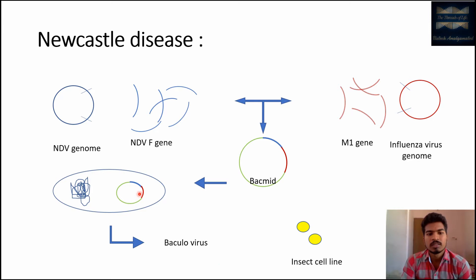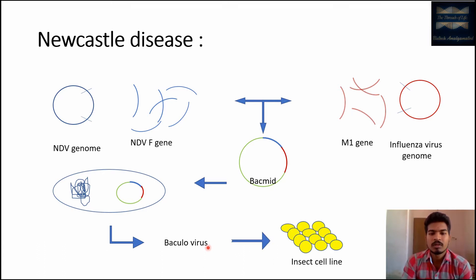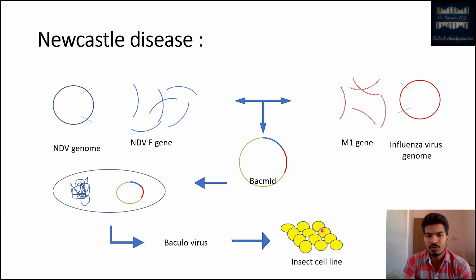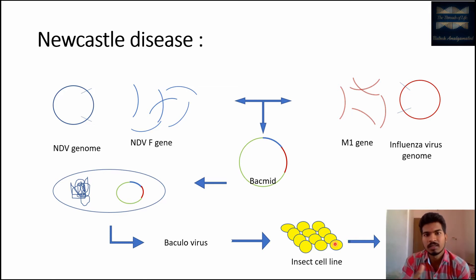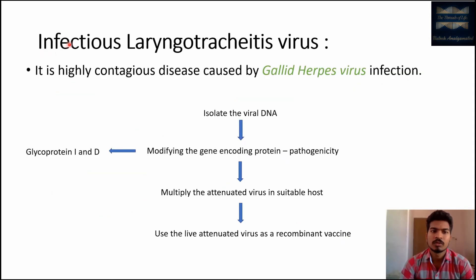Once the bacmid is multiplied in sufficient quantities, it is isolated and inserted into baculovirus. This baculovirus then infects an insect cell line. When the insect cell line is transformed with this bacmid carrying the two foreign genes, the insect cells express the antigenic protein. That antigenic protein can then be purified and used as a subunit recombinant vaccine.